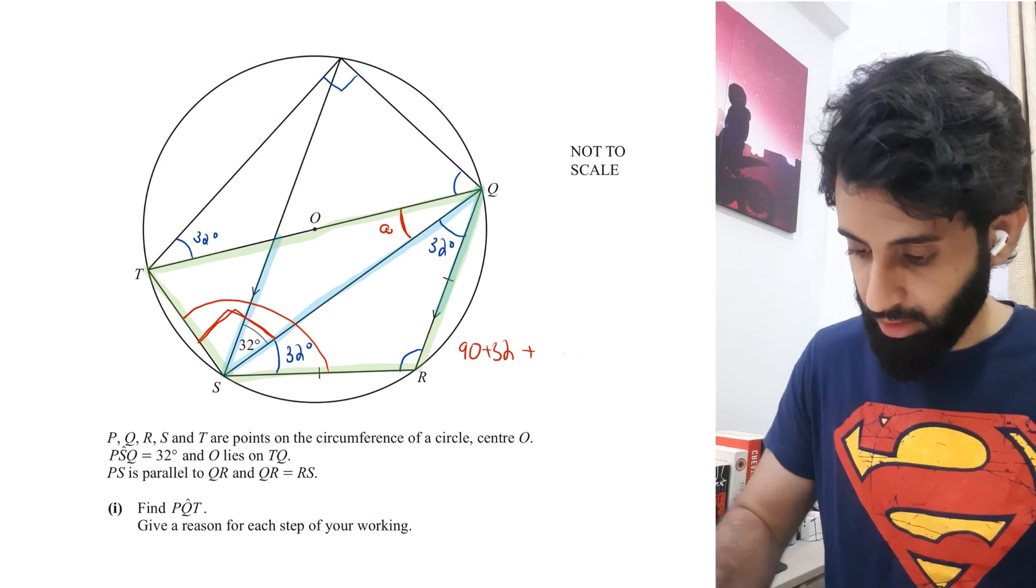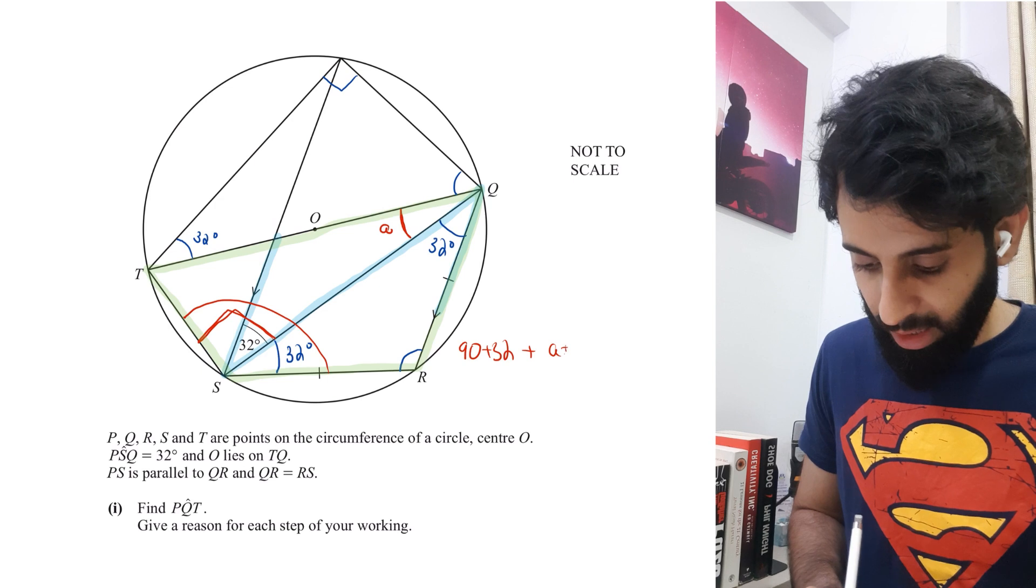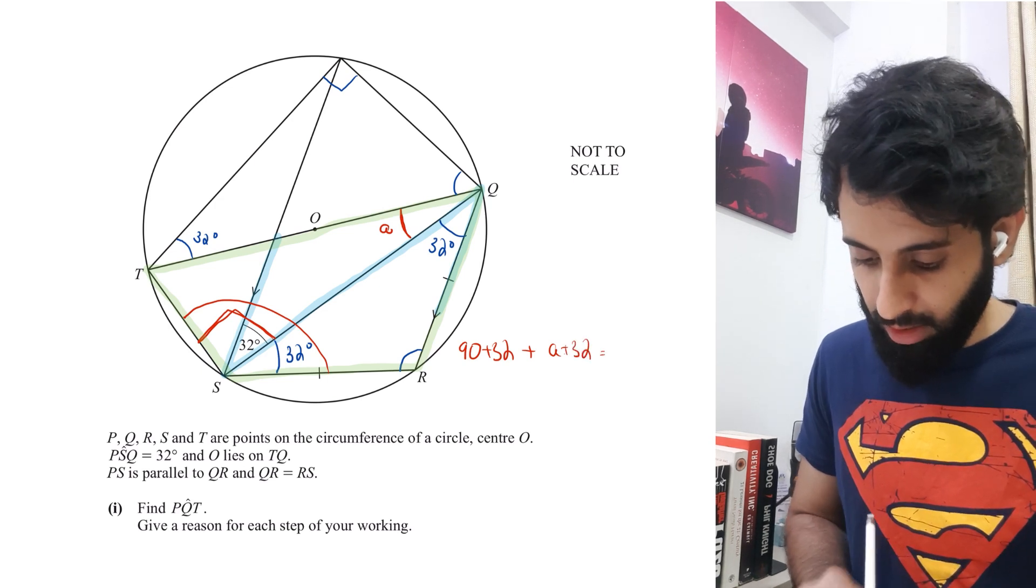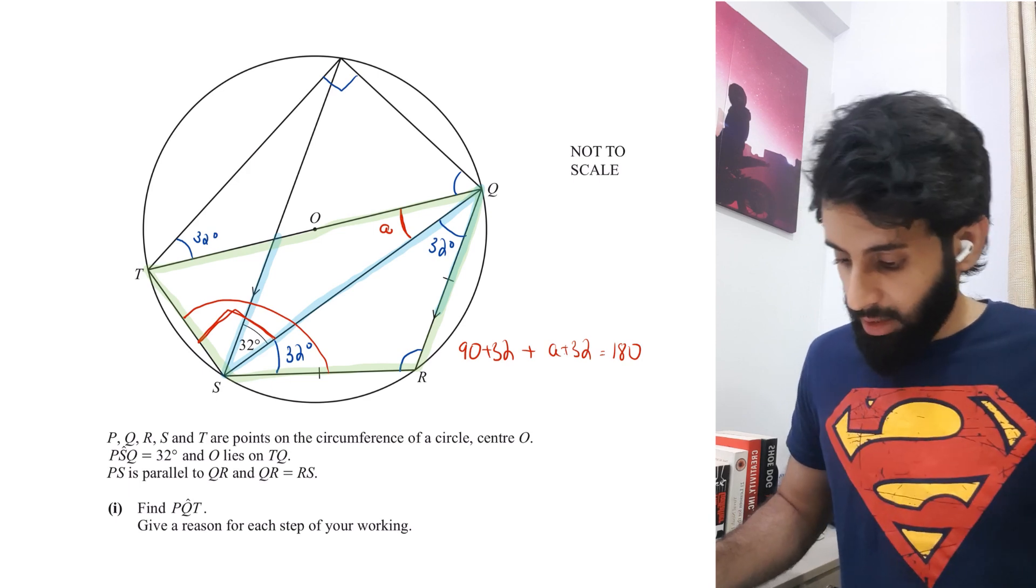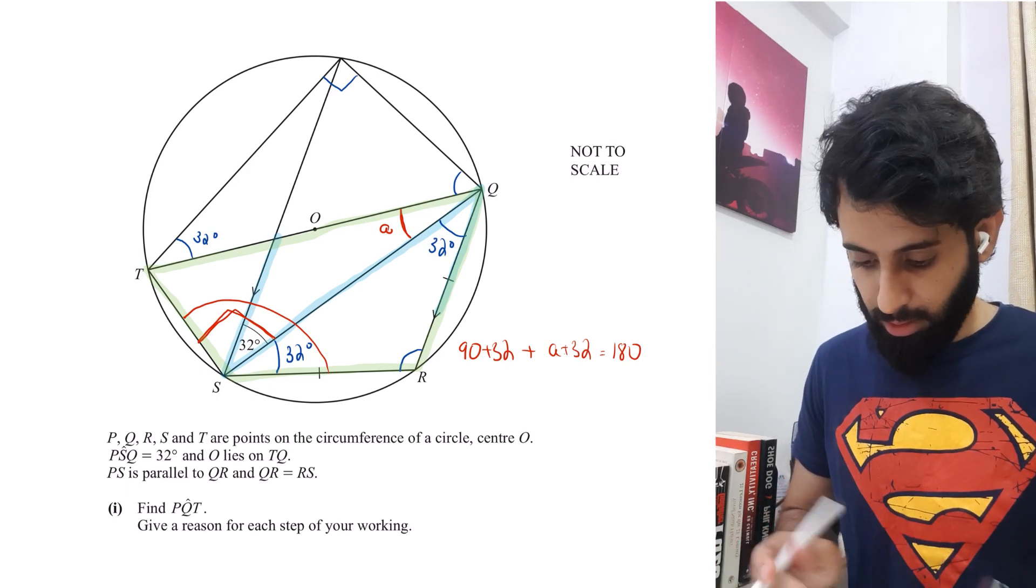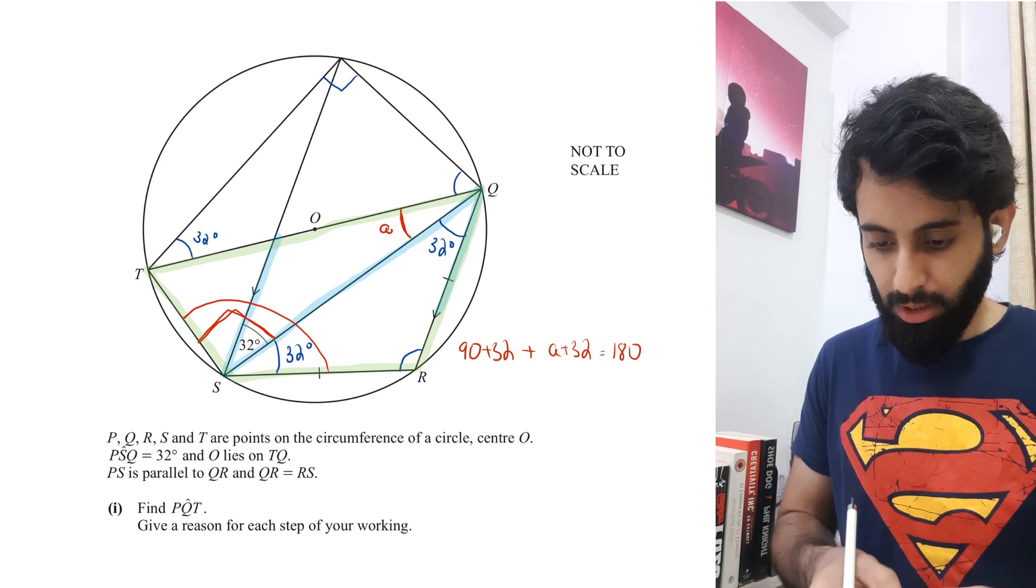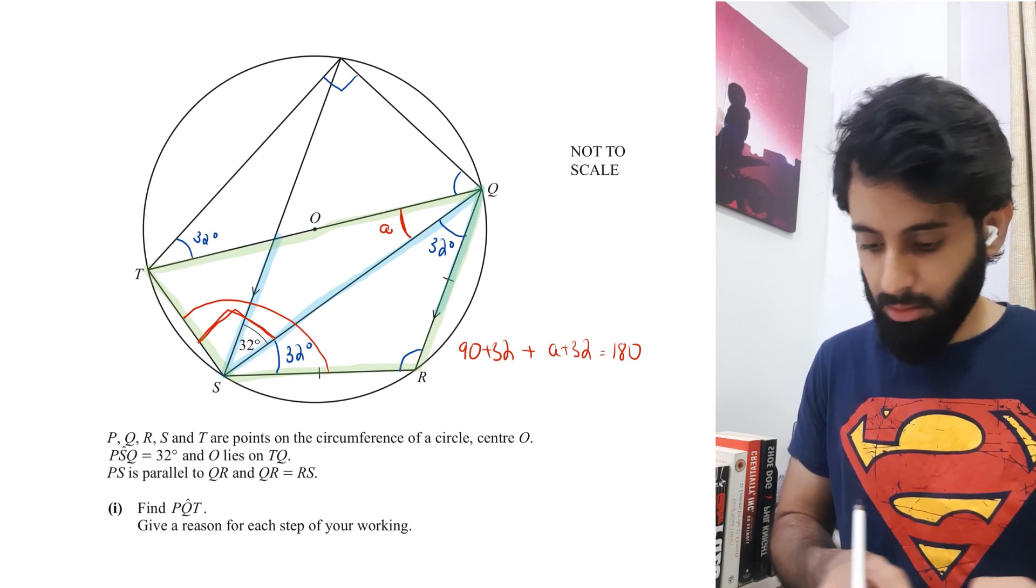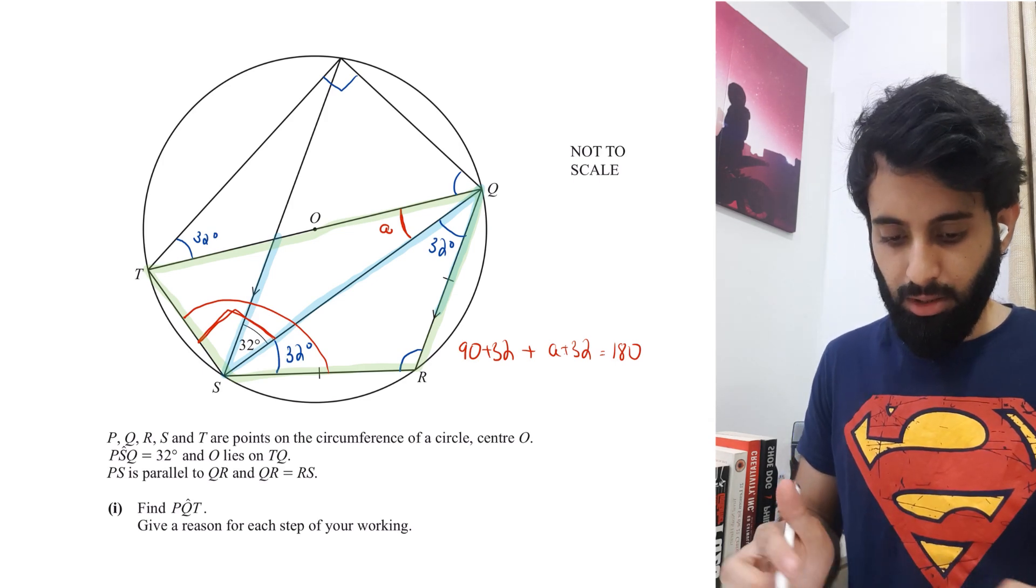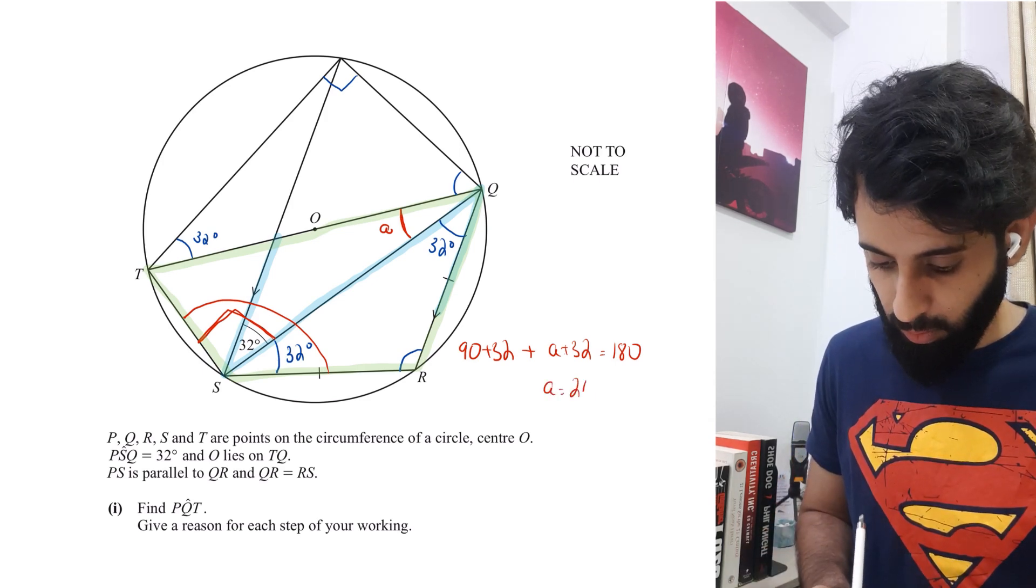I just realized I made an error here. So 90 + 32 + A + 32 is going to equal 180 degrees. Let's work this out. 90 + 32 + 32 then 180 minus answer. So I get A equals 26 degrees.